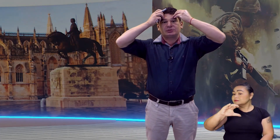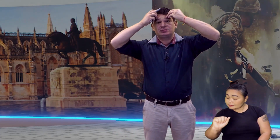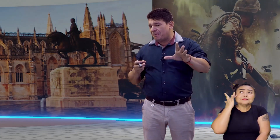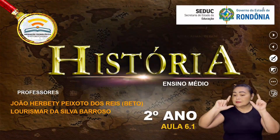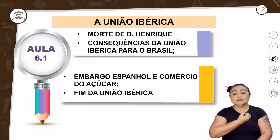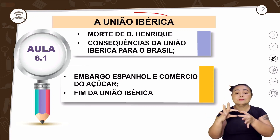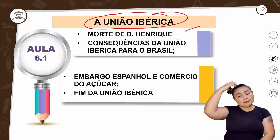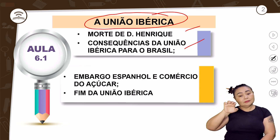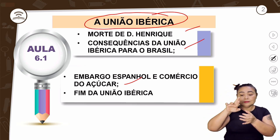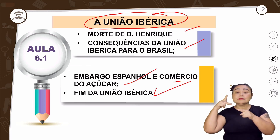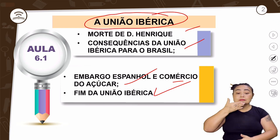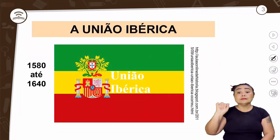Professor, pelo amor de Deus, o que é isso, União Ibérica? Não percam nenhum capítulo dessa aula, porque vocês vão entender isso agora na tela. A aula de número 6 vai falar sobre União Ibérica, a morte de Dom Henrique, as consequências da União Ibérica para o Brasil, o embargo espanhol comercial do açúcar e o fim da União Ibérica.